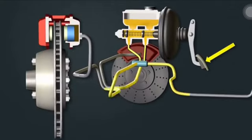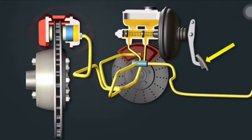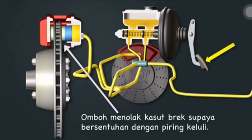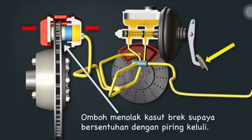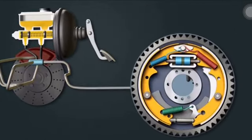Apabila pedal brake ditekan, omboh kecil pada roda hadapan ditolak supaya bersentuhan dengan kedua-dua belah piring keluli. Daya geseran antara kasut brake dengan piring keluli boleh memperlahankan kereta sehingga berhenti.